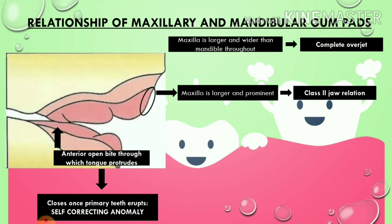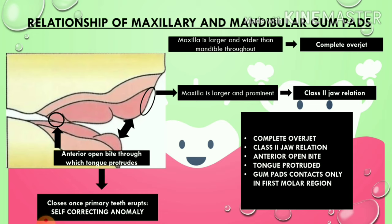The maxilla is larger and prominent, and hence it usually shows a Class 2 jaw relation in gum pads. The maxilla is also larger and wider than the mandible, hence it shows complete overjet. In the first molar area, the maxillary and mandibular gum pads contact each other, causing an anterior open bite. Through this anterior open bite the tongue usually protrudes, but this closes once the primary teeth erupt, making it a self-correcting anomaly. In summary, the features are: complete overjet, Class 2 jaw relation, and anterior open bite with tongue protrusion.